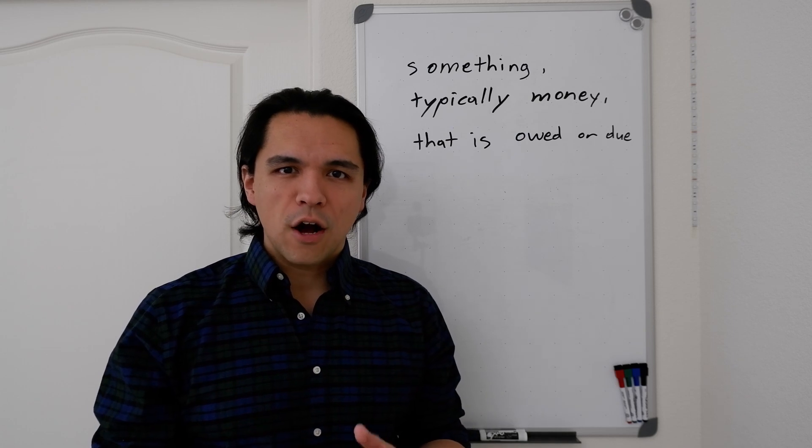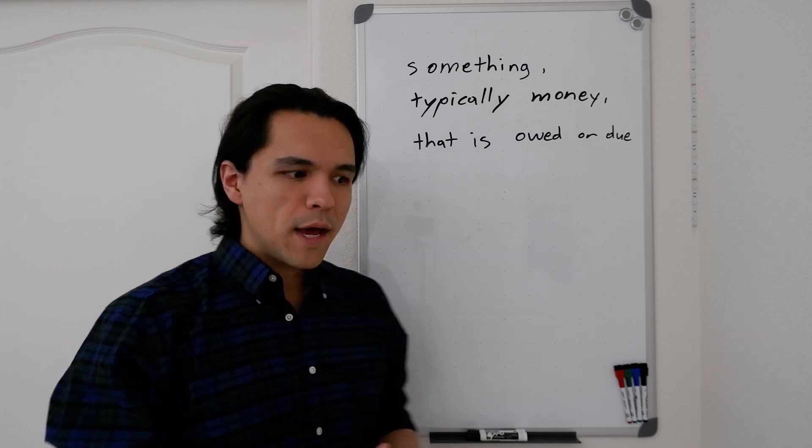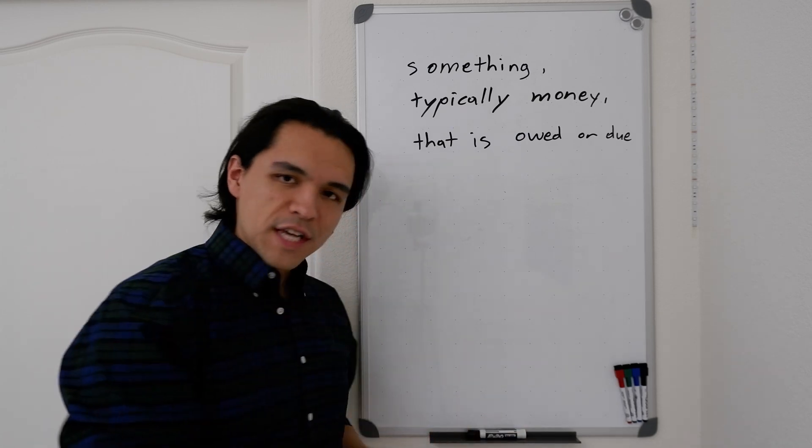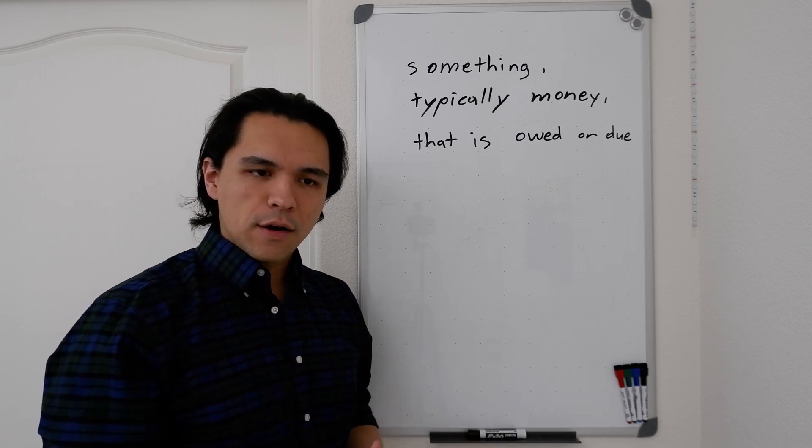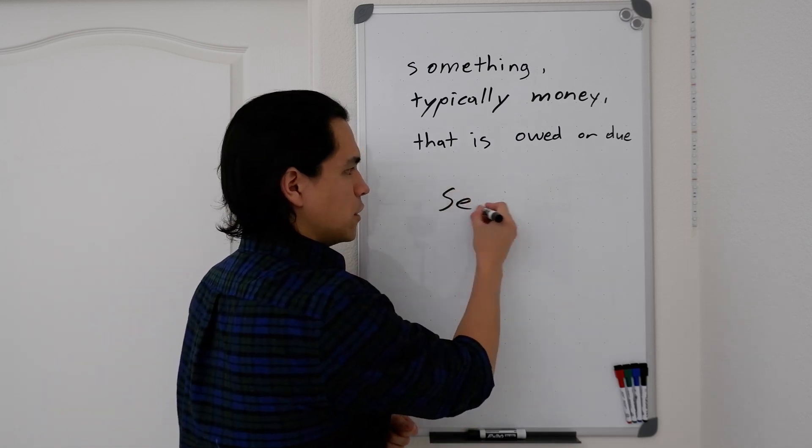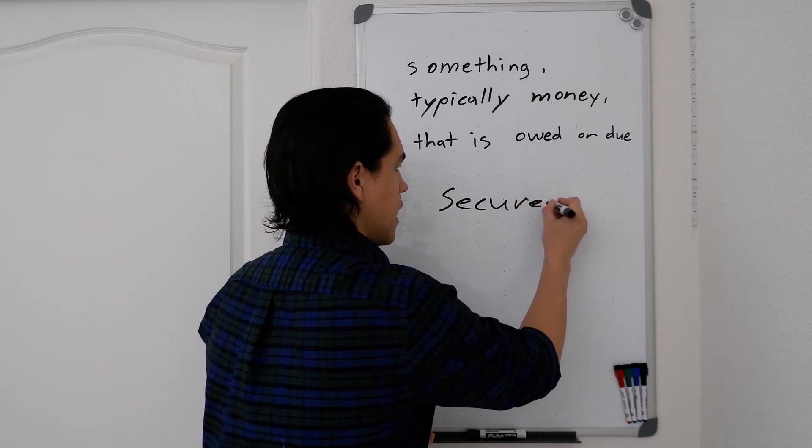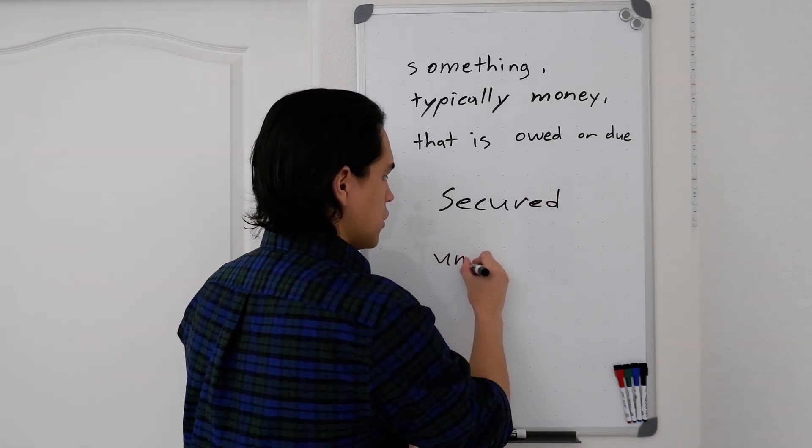So what types of debt are there? There's really two major classifications of debt that we want to talk about and think of. There is secured debt and then there is unsecured debt.